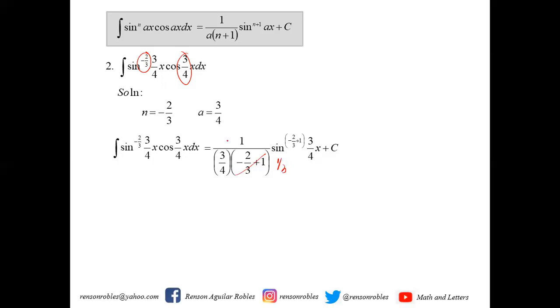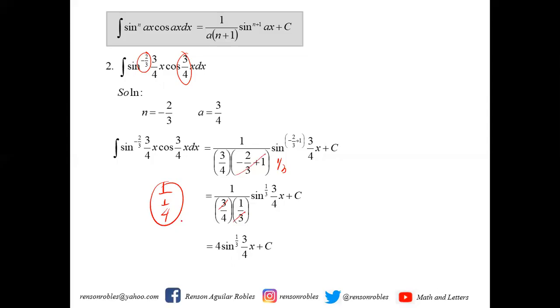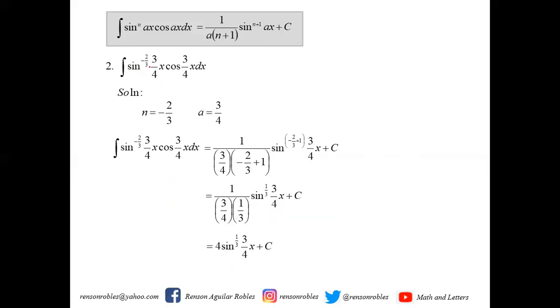Multiplying, we have 1 over [3/4 times 1/3] times sine to the 1/3 of (3/4)x plus c. This simplifies to 1 over (1/4), which equals 4. So the final answer is 4 sine raised to 1/3 of (3/4)x plus c. That is the integral of sine raised to negative 2/3 of (3/4)x times cosine (3/4)x dx.